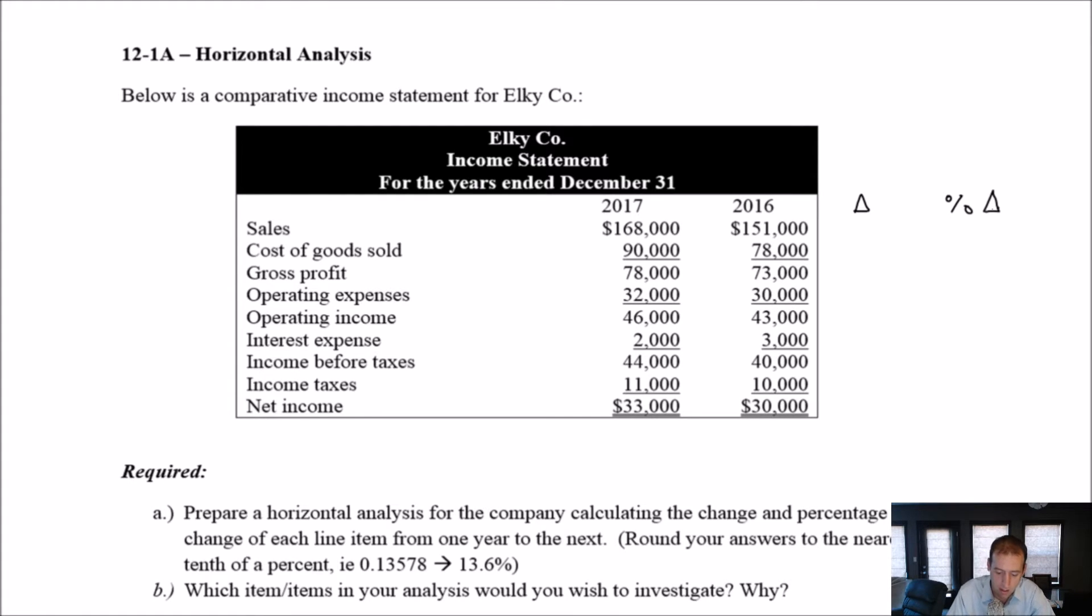Let's look at the change in sales from one year to the next. The change in sales was 17,000. It is positive, it grew by 17,000. If it was negative, we'd put this in brackets. Cost of goods sold also grew, it grew by 12,000. I'm just looking at the difference from one year to the next. 151 to 168, that's 17,000. 78 to 90, the difference is 12,000. 73 to 78, our gross profits grew by 5,000.